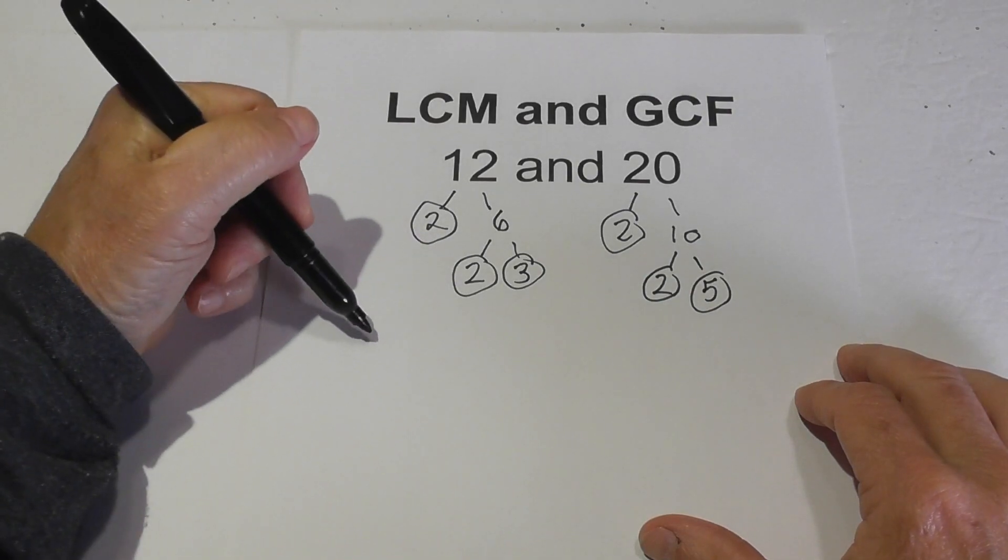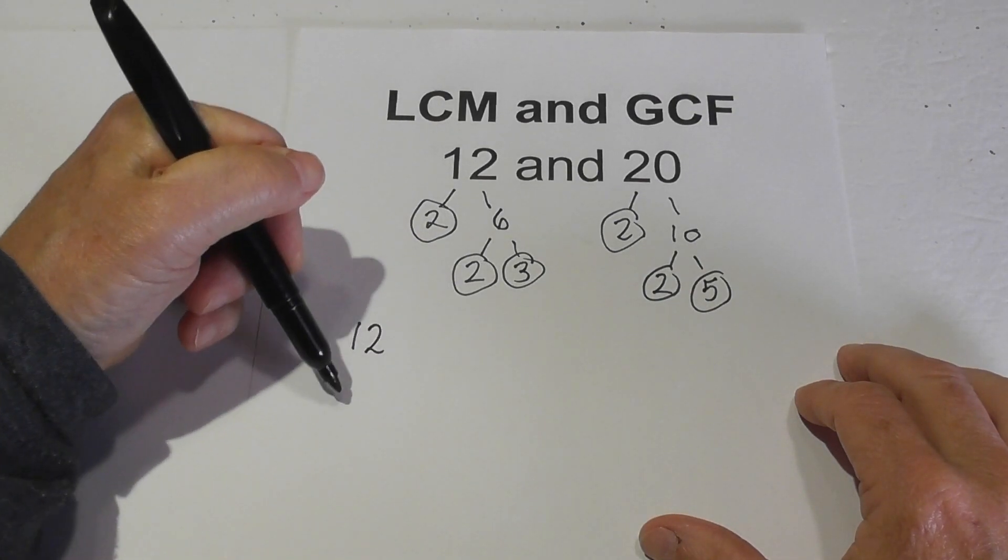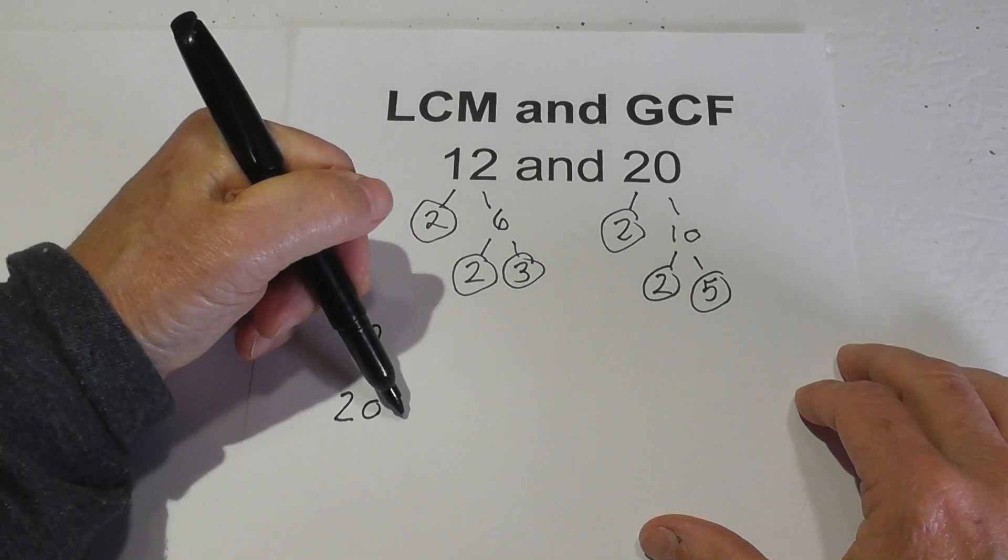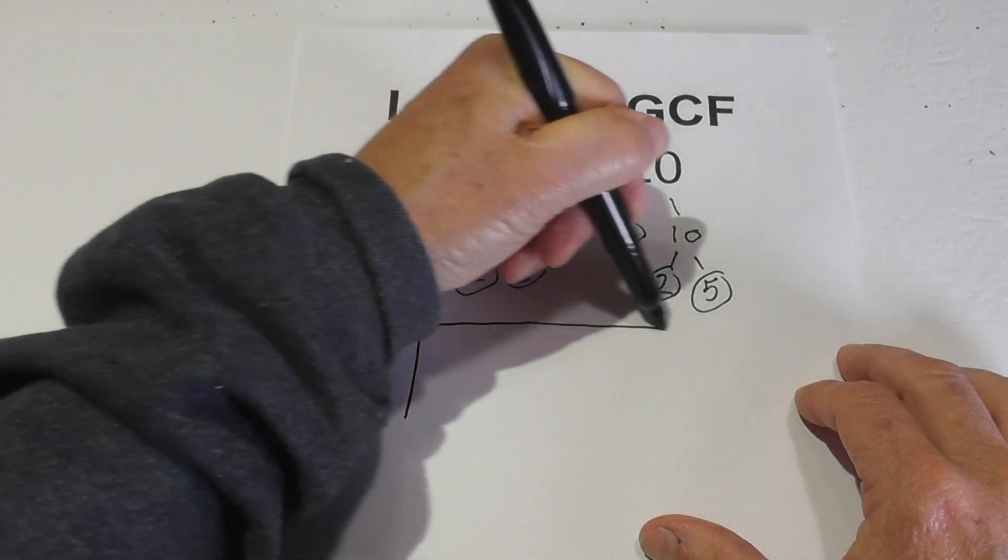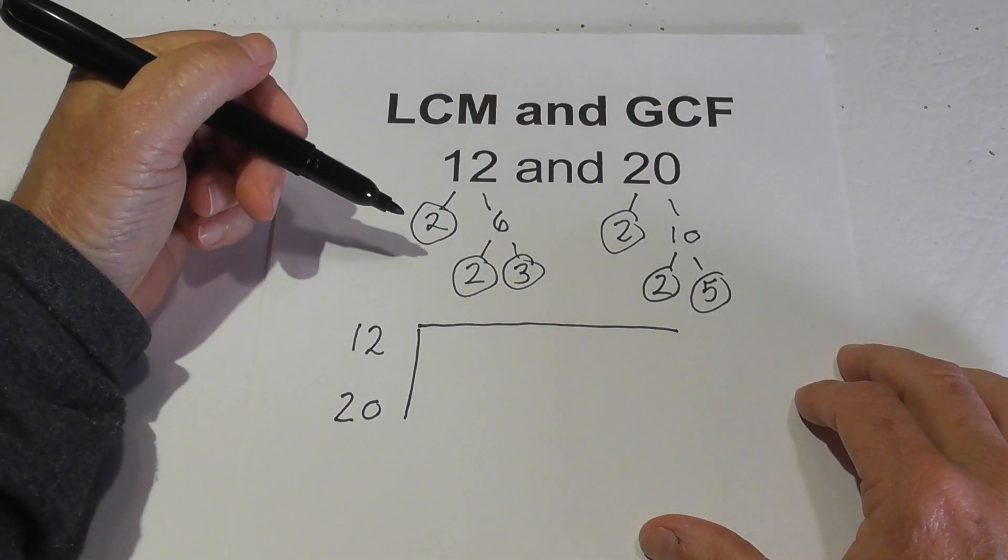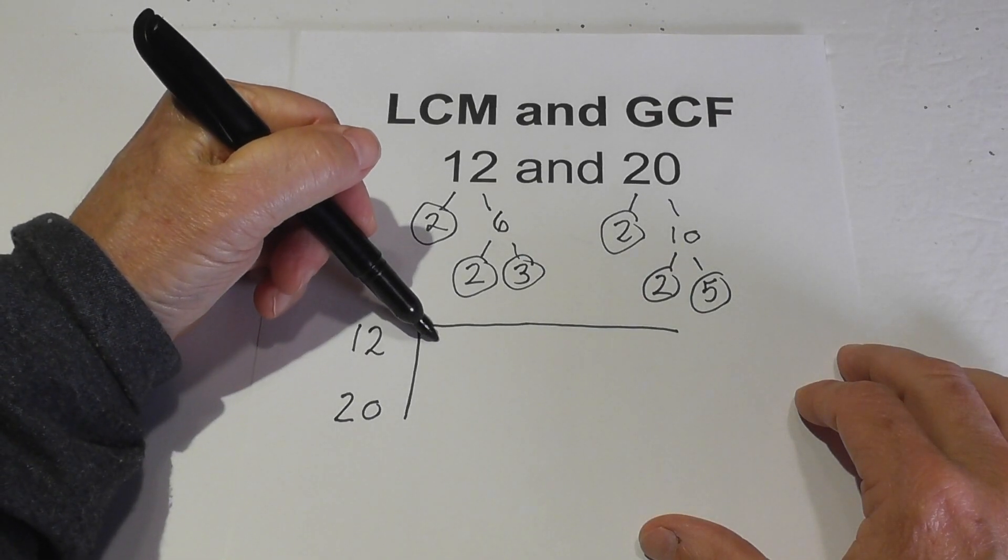Okay, so now what I like to do is write out a little chart and it just keeps everything organized, and you only have to remember a couple of things to get the lowest common multiple. So let's write out the factors.